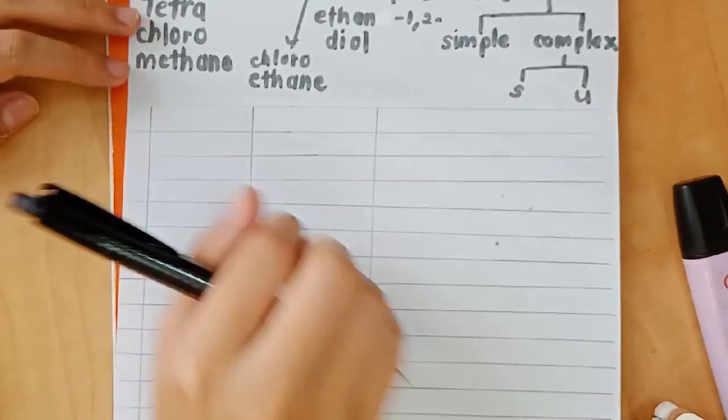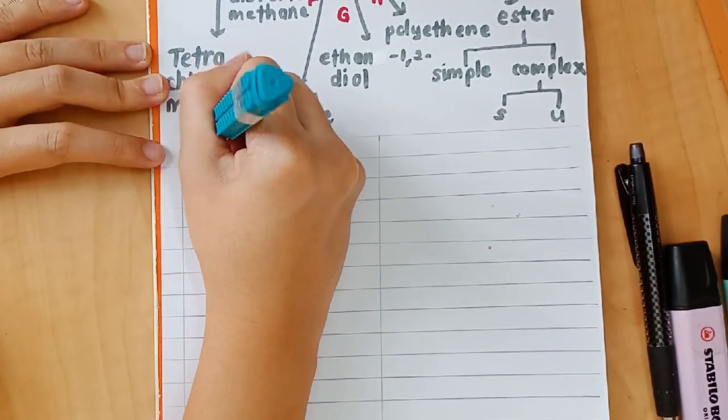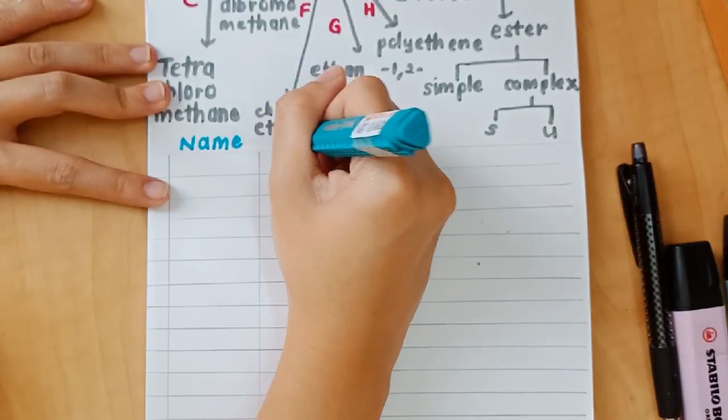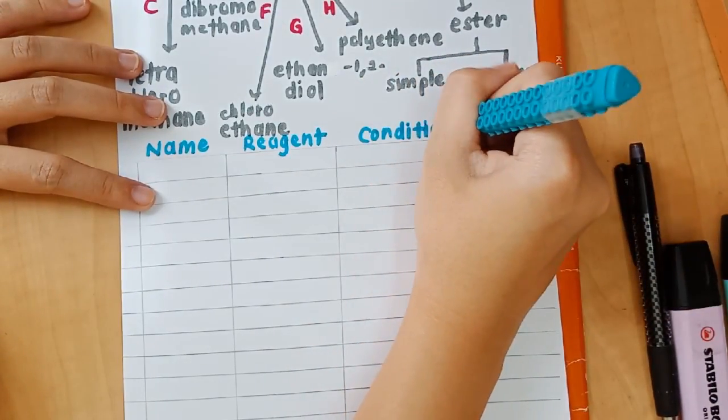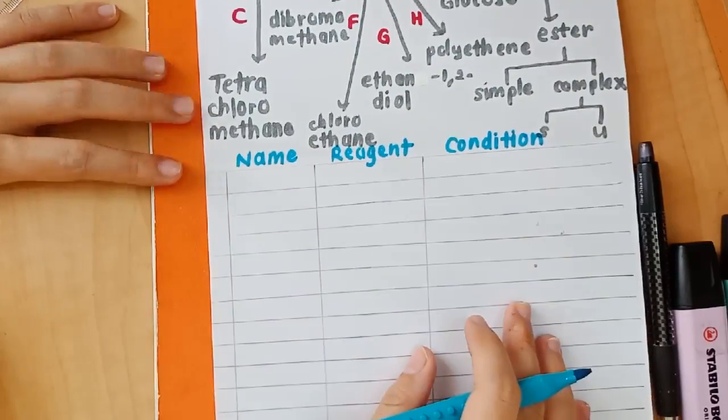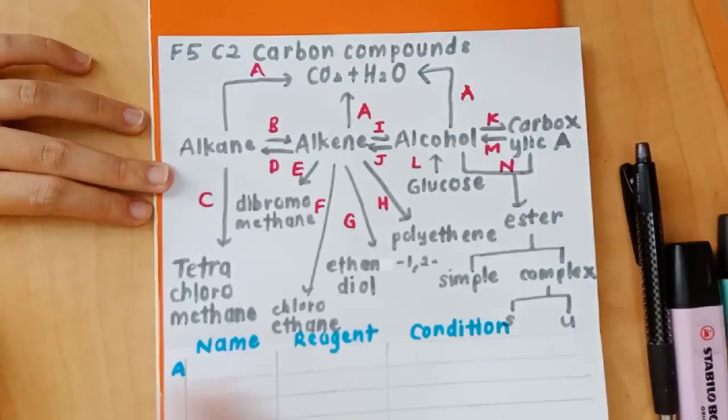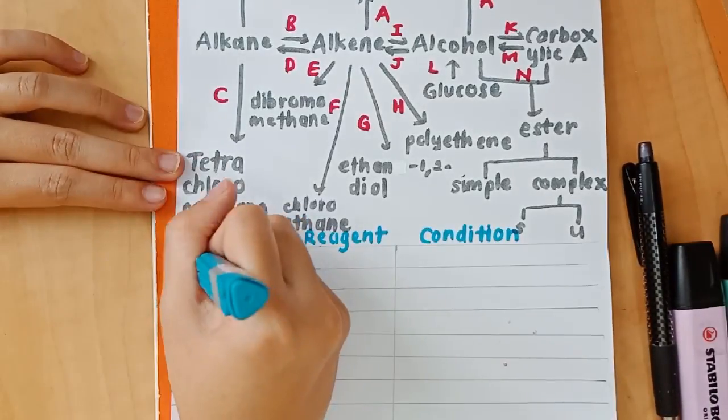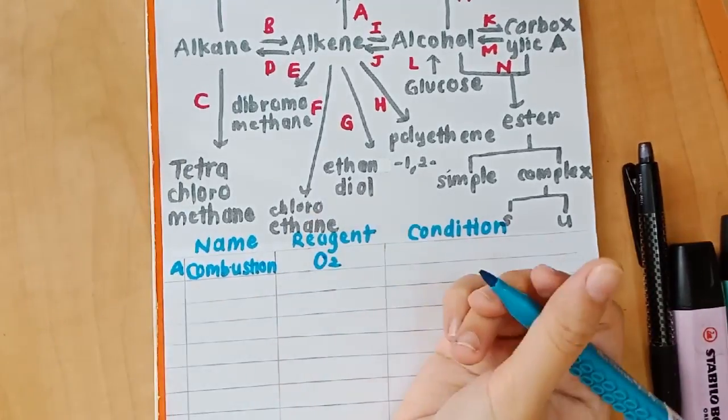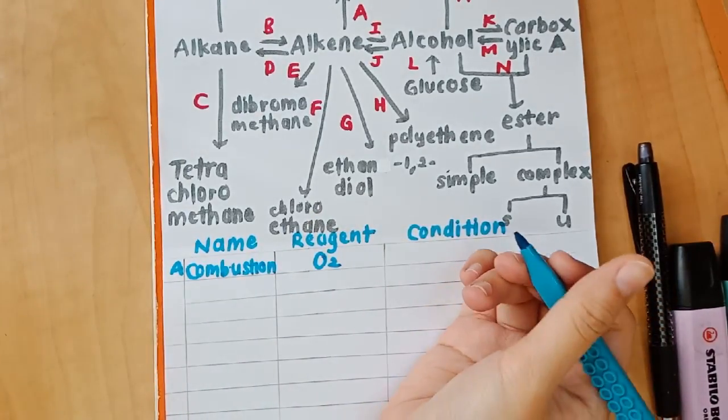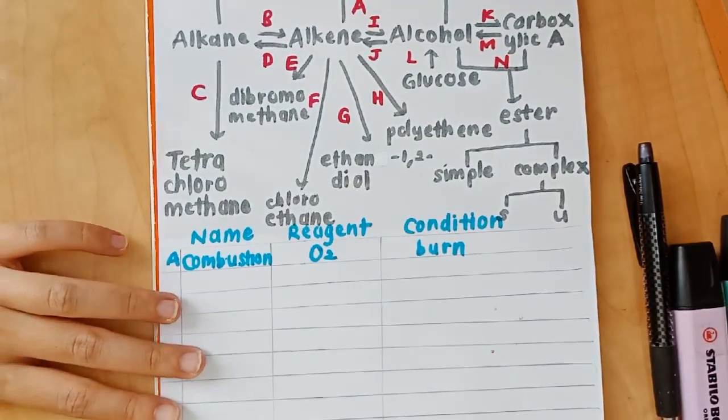Go ahead and draw a table. And then label the table accordingly. So you're going to label the top of the tables with name, reagent, and condition. And once you're done labeling that, we can then proceed with the first reaction, which is labeled with A. And as you can see, A denotes the common arrow coming out from alkane, alkene, and alcohol. The reaction is known as combustion. The reagent is oxygen. And the condition is simply burn. There is no actual condition for this one.